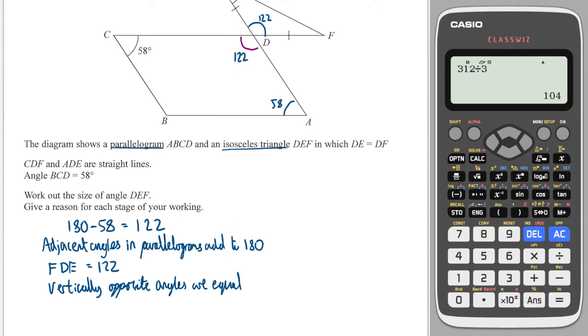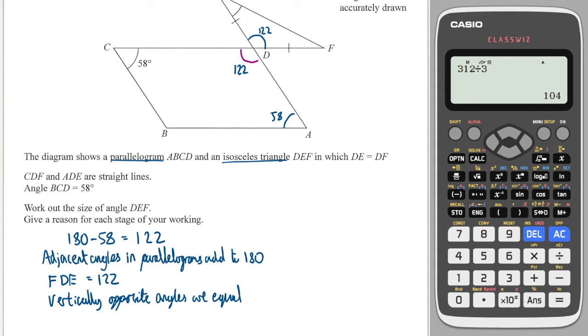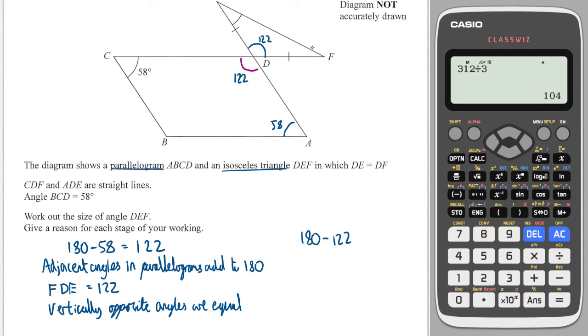And then finally the last calculation I'll do to work out this angle up here is I would do 180 minus 122 which will give me what's left over in that triangle and then divide it by two because those two angles are equal. And that will give me 29. Of course again I've got to give a reason for it so I will say that isosceles triangles have two equal angles and we are done.